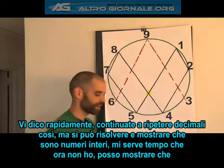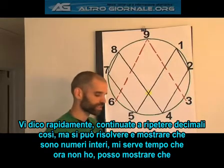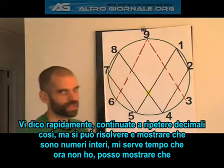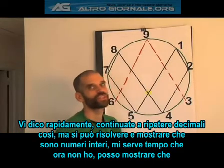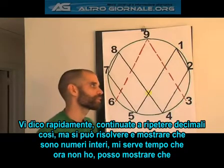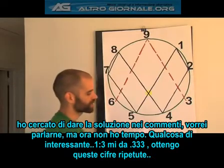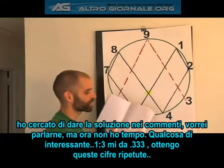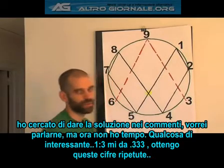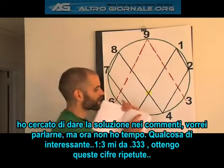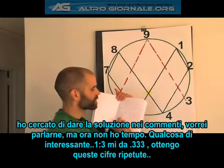You get repeating decimals when you do this, but there's a way to solve this and show them to be whole numbers. If people are very interested in that, I'm not going to take the time to do it right now. I can show that — if people want to write comments on the video, I will try to get the solution up. You can see I have my numbers and all my work written out here. 1 divided by 3, I get this number .333 — these repeating digit numbers.